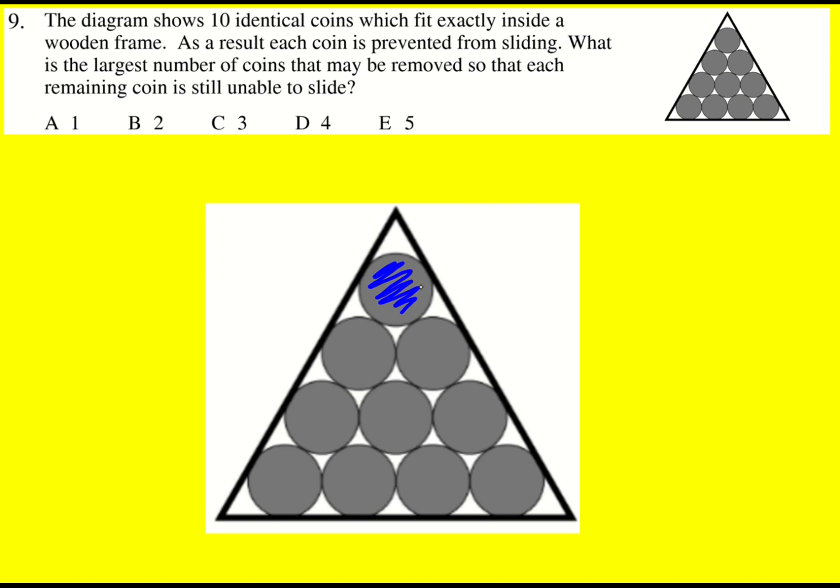So if we went and took this one away then I can't take that one or that one. I could try and take that one away but then I wouldn't be able to take any of those three which would only leave me one here. So I can do three.